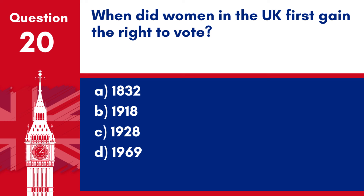Question 20. When did women in the UK first gain the right to vote? a. 1832. b. 1918. c. 1928. d. 1969.